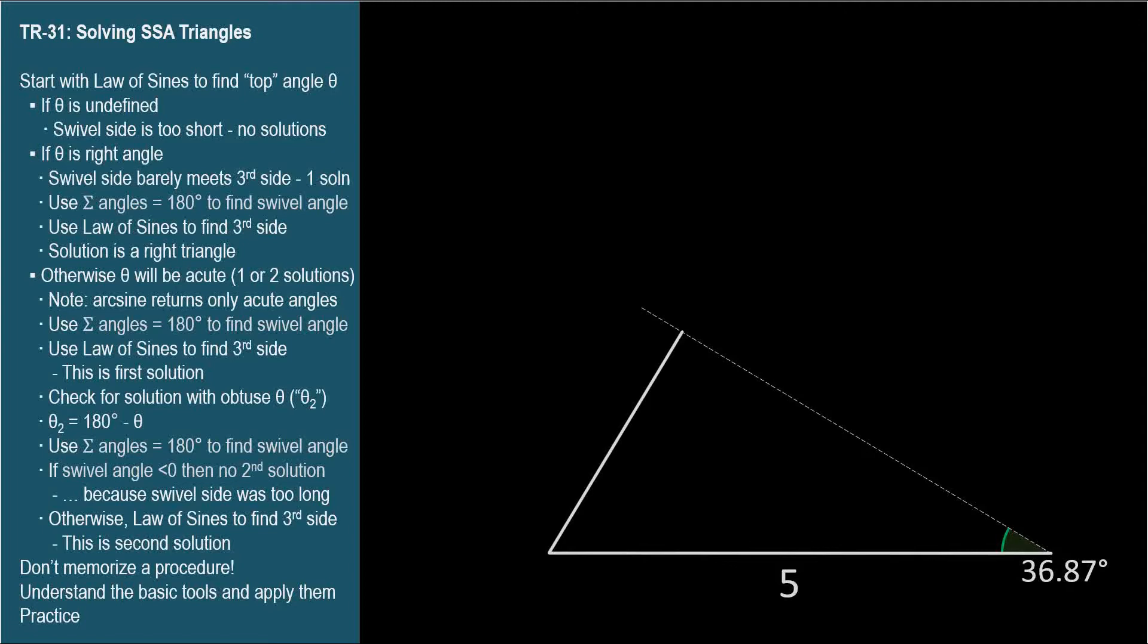I chose this familiar triangle so we can have some intuition for what to expect before we solve. For example, if the swiveling side were exactly 3, it would just barely reach the third side to form a right angle. So if it's 2.5, we'd expect it to be too short.